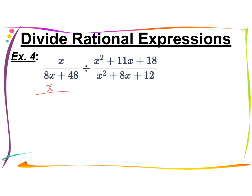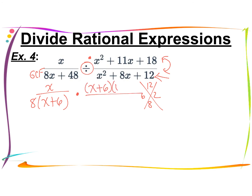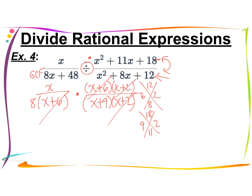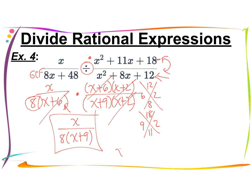My first numerator is just x. For the first denominator, I take out a GCF of 8, leaving 8 times x plus 6. Since I'm dividing, I multiply by the reciprocal. For the second fraction flipped: the numerator trinomial — what multiplies to 12 and adds to 8 — that's 6 and 2, giving x plus 6 and x plus 2. The denominator trinomial — what multiplies to 18 and adds to 11 — that's 9 and 2, giving x plus 9 and x plus 2. Simplifying: x plus 2s cancel, x plus 6s cancel — don't lose the 8. The simplified answer is x over 8 times x plus 9. Domain restrictions: x can't be negative 6, negative 9, or negative 2.